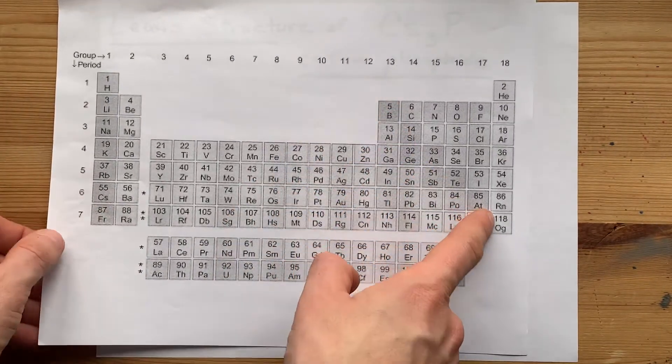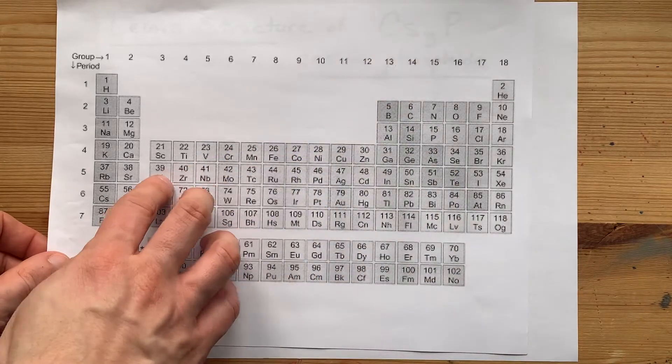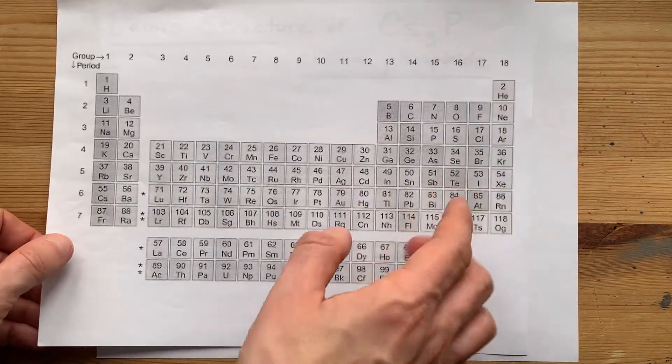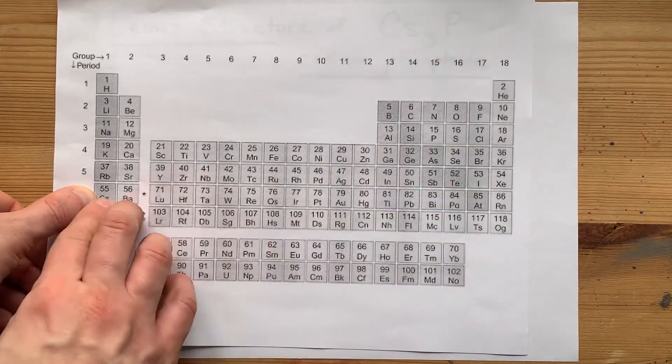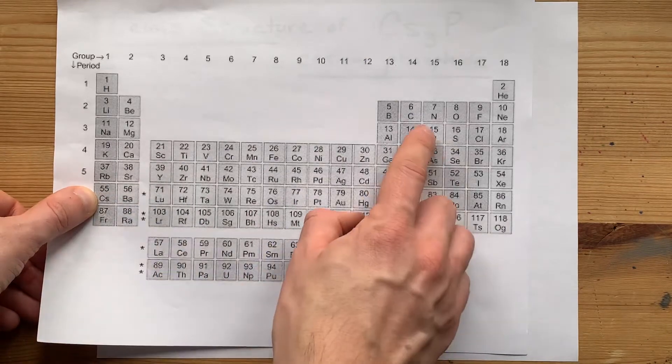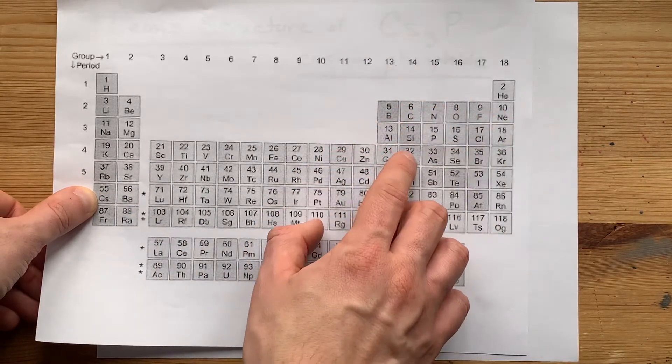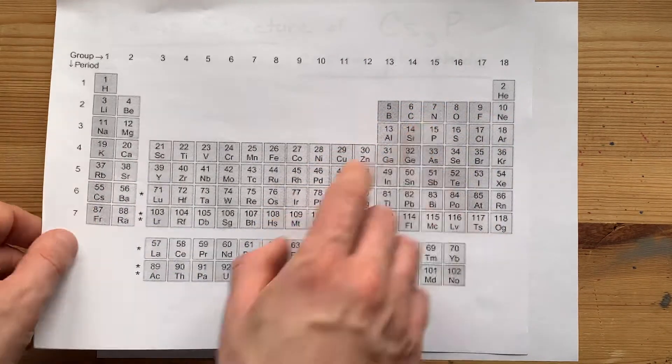This staircase on periodic tables separates the metals from the non-metals. Cesium on the far left is definitely a metal, and phosphorus is just above the staircase. It's a non-metal.